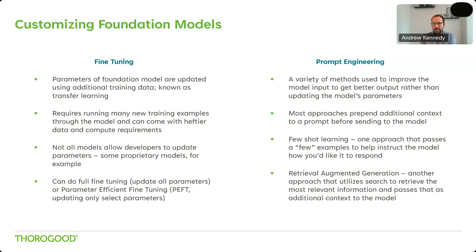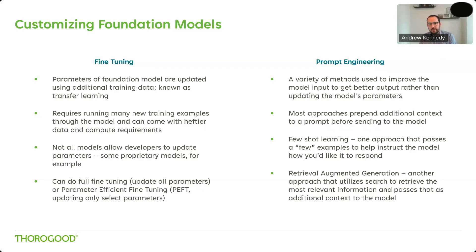The second way of customizing foundation models is prompt engineering. Prompt engineering refers to a variety of methods used to update and improve the model input. So the two different approaches are: either we can change the model, or we can change the input. In prompt engineering, we're updating the input rather than updating the model itself. Most approaches for prompt engineering add more context to a prompt — usually adding it at the start — or add more information that changes the way the model interprets the prompt to get better output for your use case.